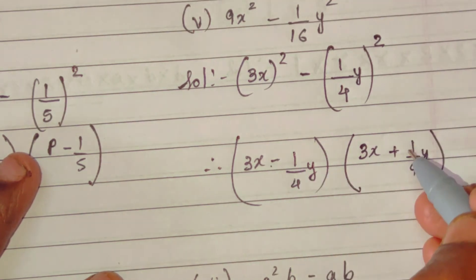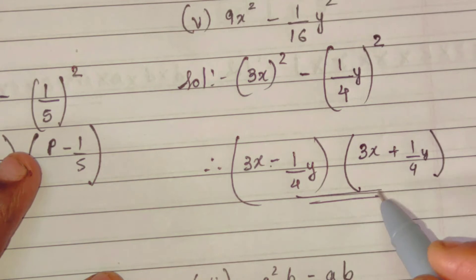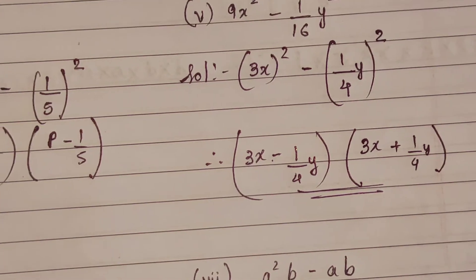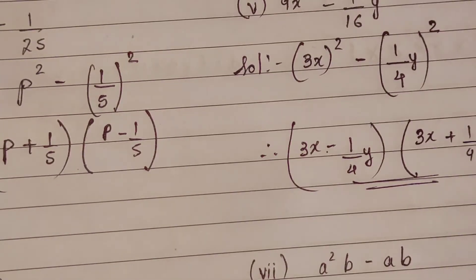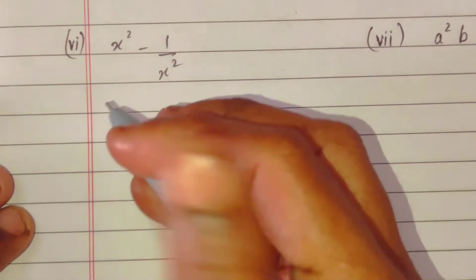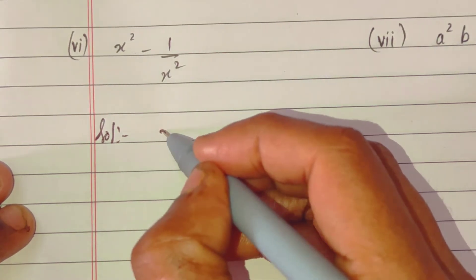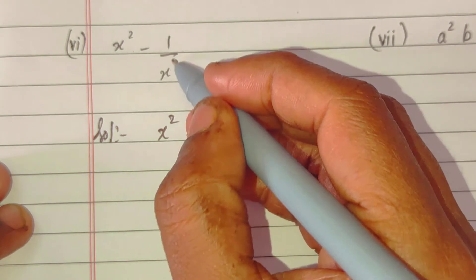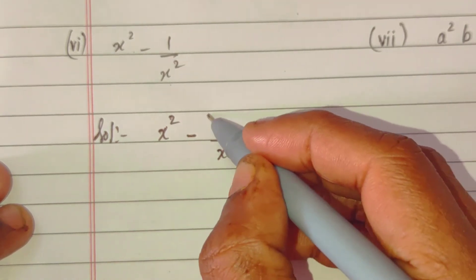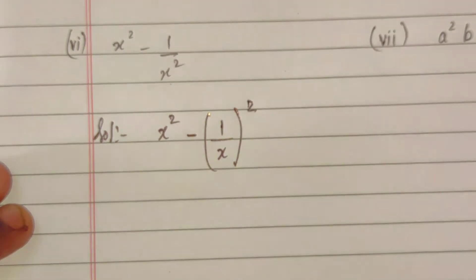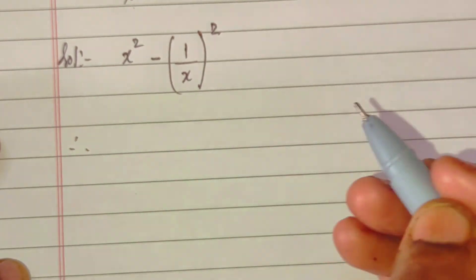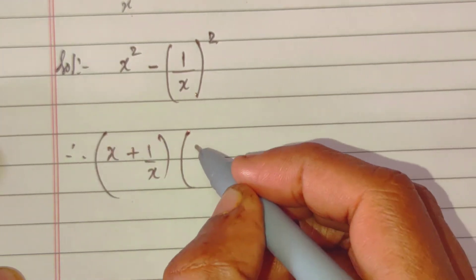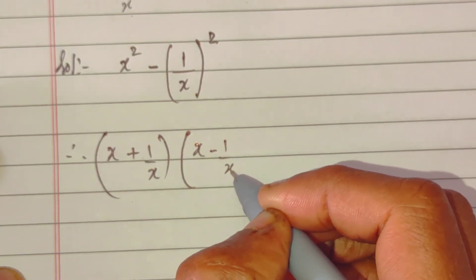x square minus 1 upon x the whole square. So x plus 1 upon x into x minus 1 upon x.